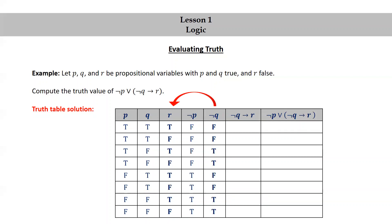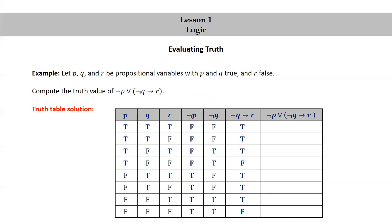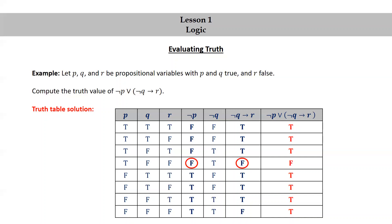For the column corresponding to not q implies r, we look at the columns for not q and for r, and we apply the implication. The implication is false only when not q is true and r is false — that happens in rows 4 and 8. Everywhere else the result will be true. We then apply the disjunction to the columns corresponding to not p and not q implies r, so whenever either column has a T the result is T, and the result is only F when both are F, which happens only in row 4.